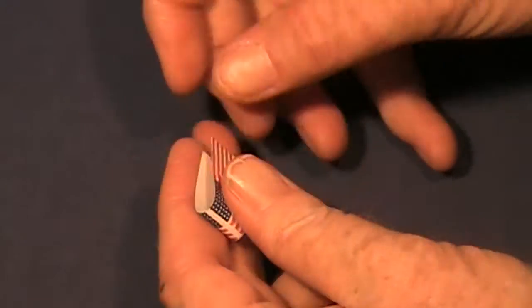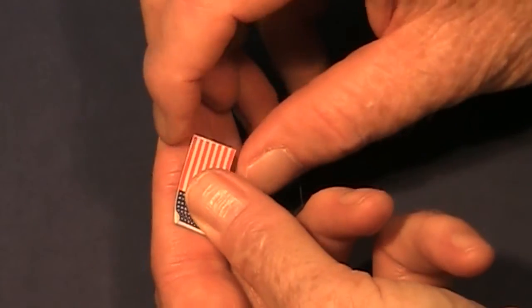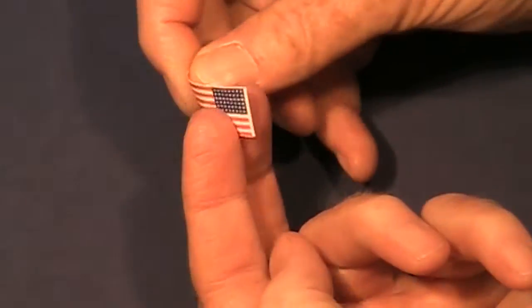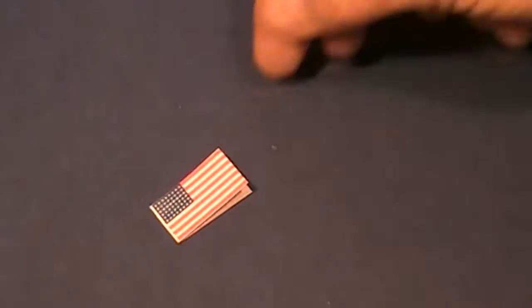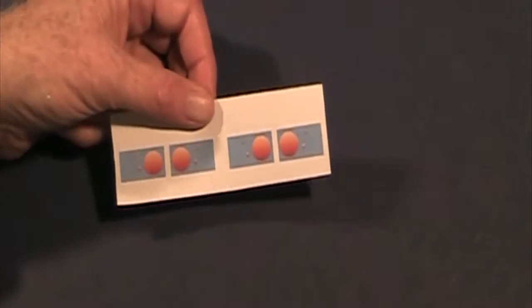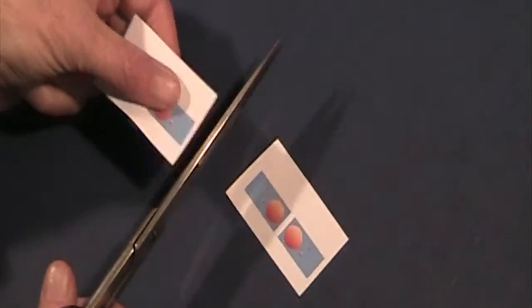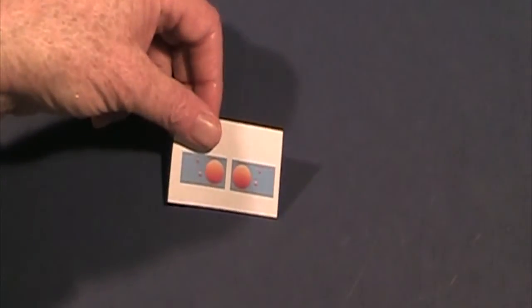Now, just fold the flag down the middle in half, just like this. Now, you see, it's the same on both sides. Now, if you make a mistake on cutting the flags, that's okay, because I've included several different ones you can use.